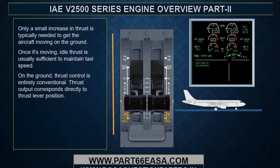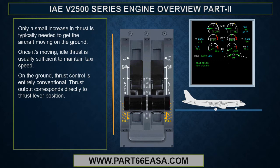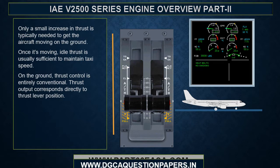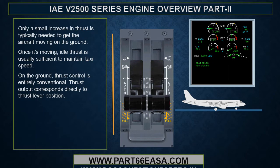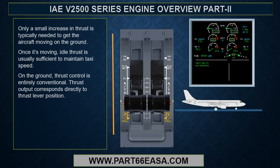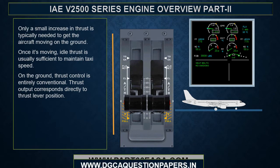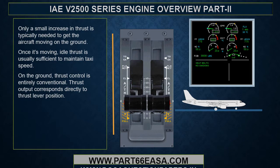Only a small increase in thrust is typically needed to get the aircraft moving on the ground. Once it is moving, idle thrust is usually sufficient to maintain taxi speed. On the ground, thrust control is entirely conventional — thrust output corresponds directly to thrust lever position.